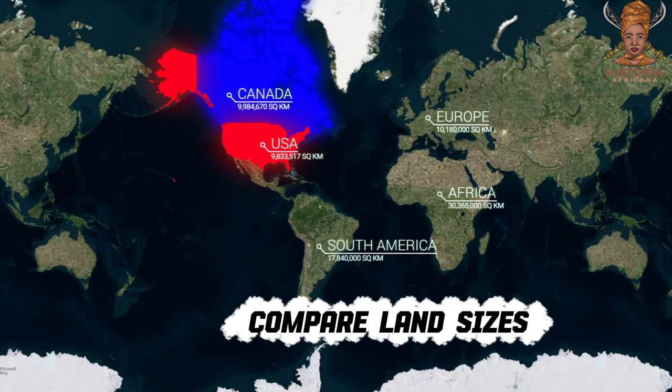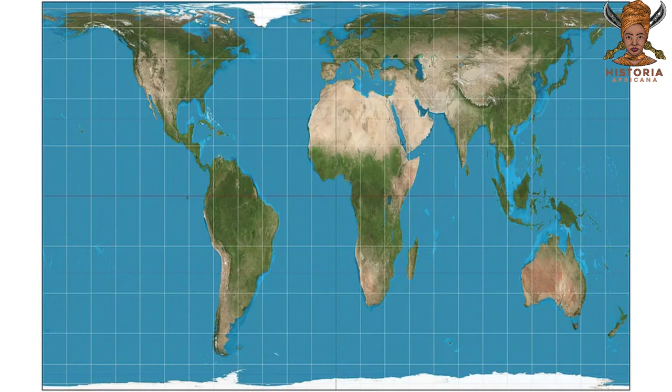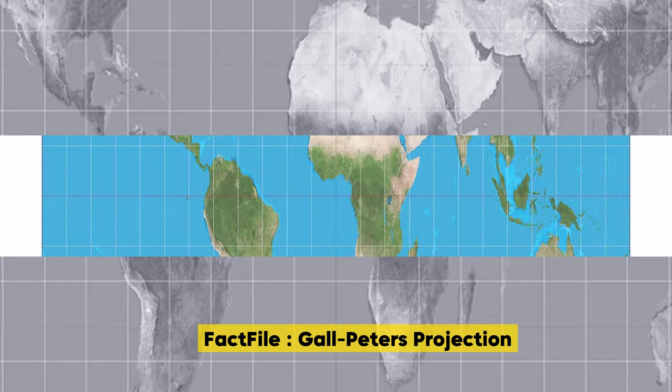Different map projections have been attempted to address these distortions, although they all have their challenges. I am neither a mathematician nor a cartographer, so I will not try to make sense of these alternate map projections.